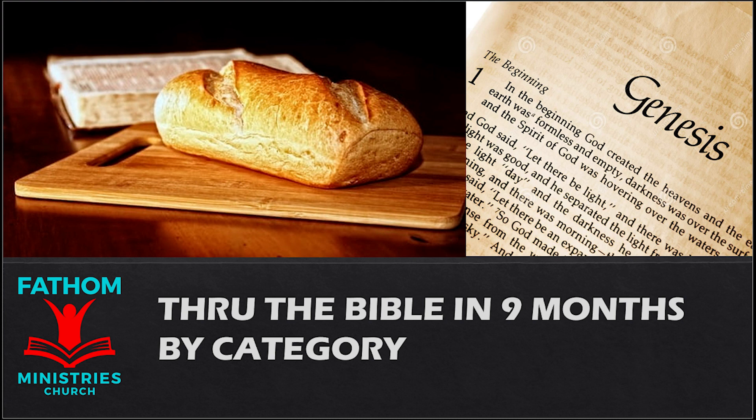The Jews did not believe that he had been blind and had received his sight until they called the parents of the man who had received his sight and asked them, Is this your son who you say was born blind? How then does he now see? His parents answered, We know that this is our son and that he was born blind. But how he now sees, we do not know. Nor do we know who opened his eyes. Ask him. He is of age. He will speak for himself. His parents said these things because they feared the Jews, for the Jews had already agreed that if anyone should confess Jesus to be Christ, he was to be put out of the synagogue. Therefore his parents said, He is of age. Ask him.